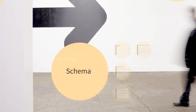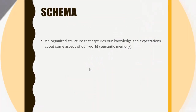One of the things we rebuild memories on is schema. Schema is an organized structure that captures our knowledge and expectations about some aspect of our world — essentially, it's semantic memory for some aspect of our world. You have a schema for what happens when you go to a restaurant, or here in New Jersey, what happens when you go to a gas station. When I first moved to New Jersey I didn't have that schema — I didn't know whether to tip the attendant or not — until you develop one.